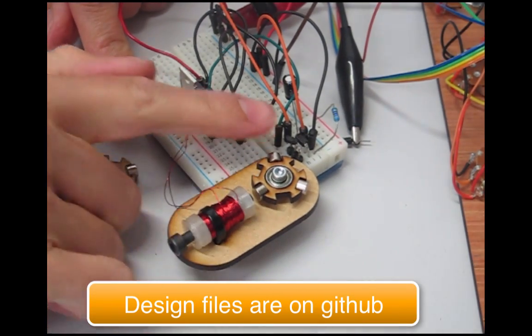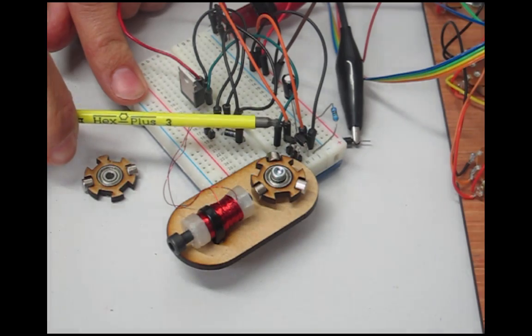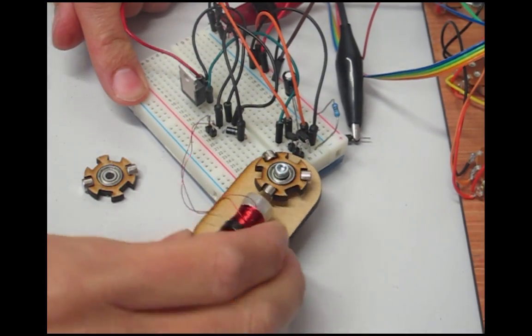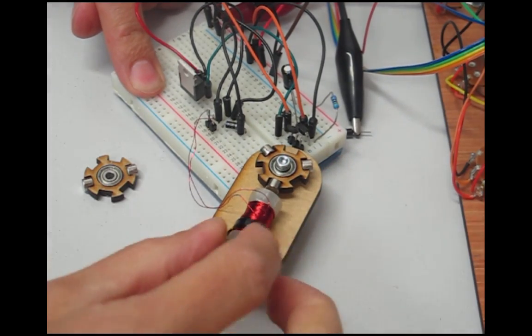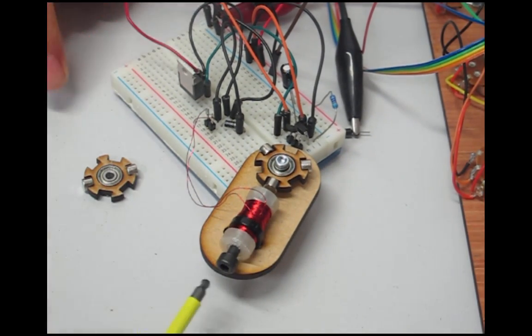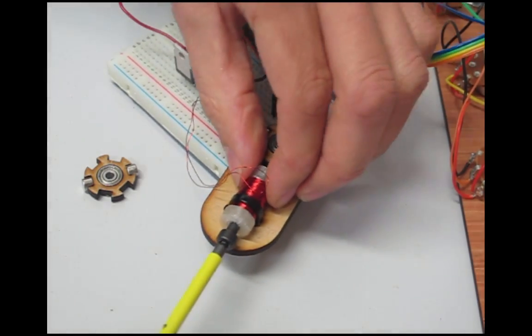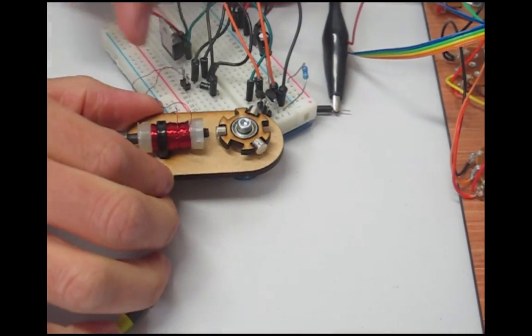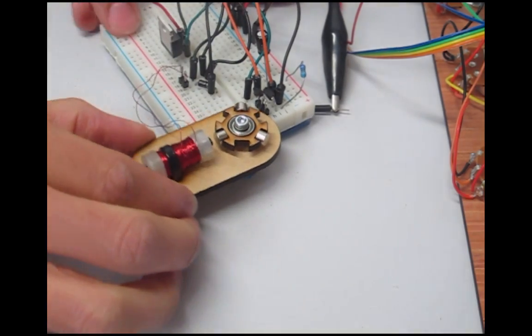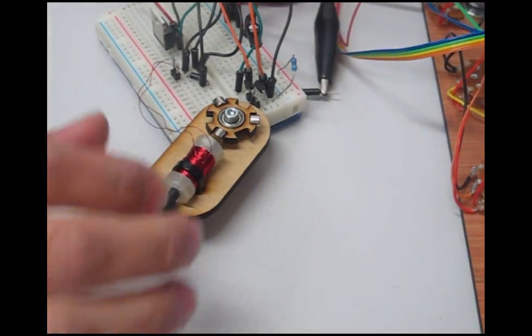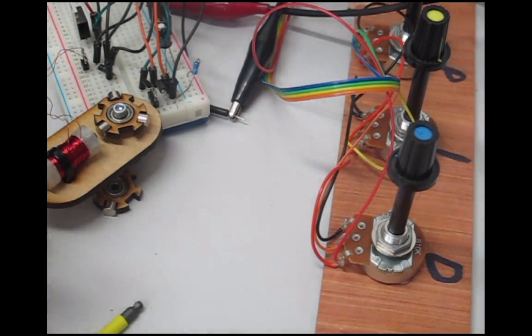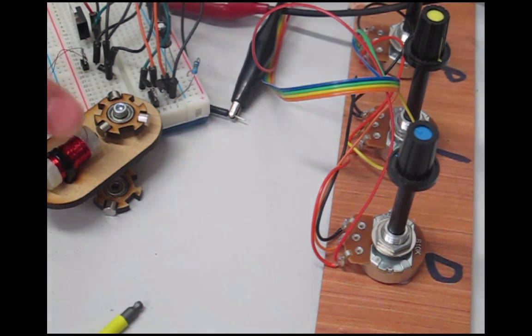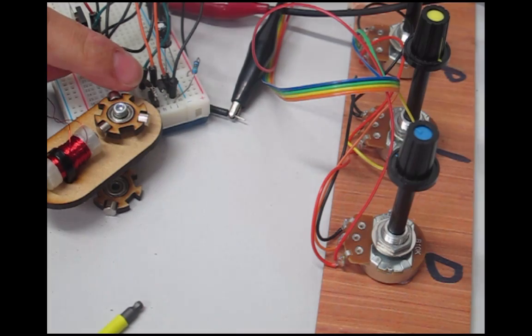This is the hall effect sensor right here that detects the magnet. And as I can move this around I can change the phase of the hall effect in relationship with the coil. The coil I can adjust how close this gap is between the magnet and the coil. And then over here I'm only using the central pot here. And that's the thing that adjusts the length of time of power delivered to the coil after the hall effect is triggered.